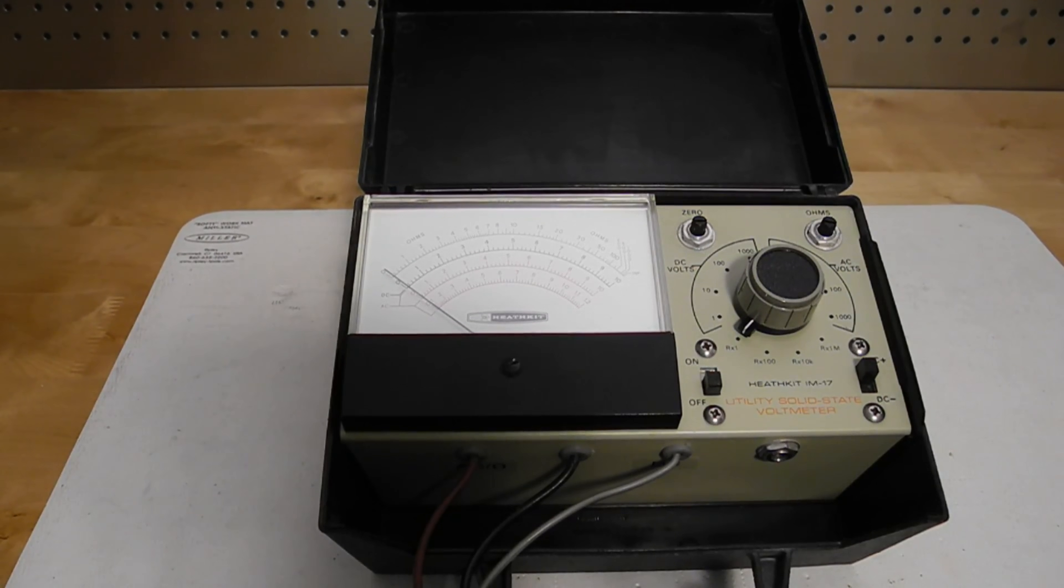One safety note, the metal chassis is connected to the common terminal so any voltage on the common lead is present there. This can be a shock hazard for example if you measure the AC line voltage and the common test lead gets connected to the live rather than the neutral wire.